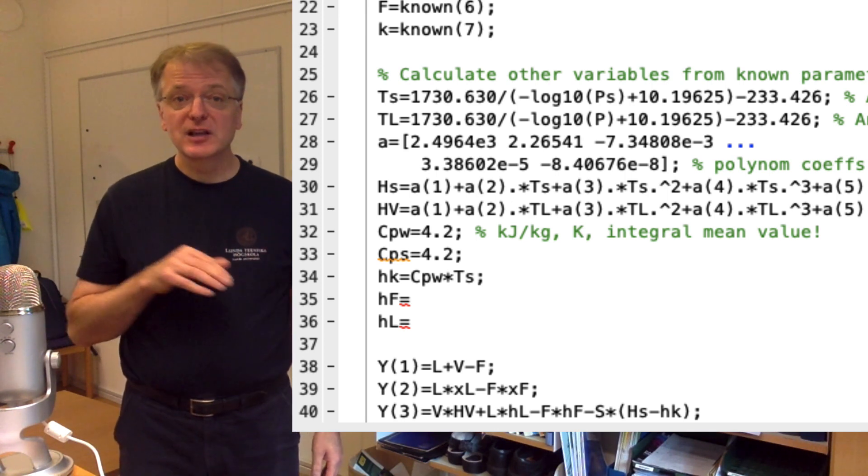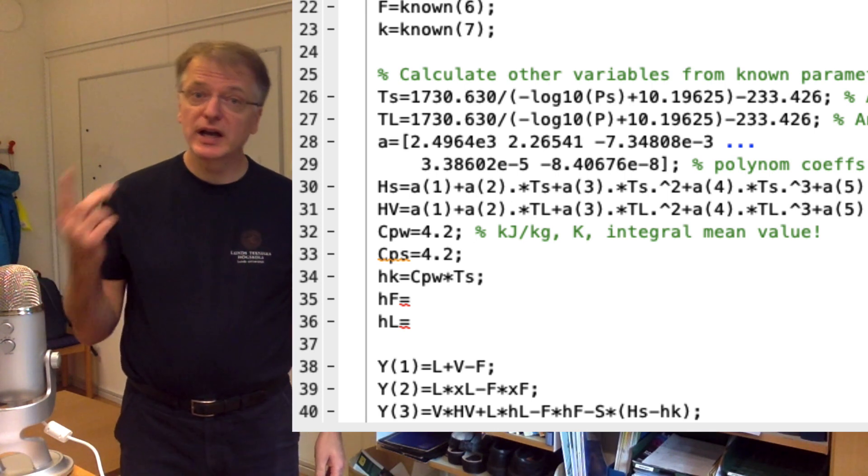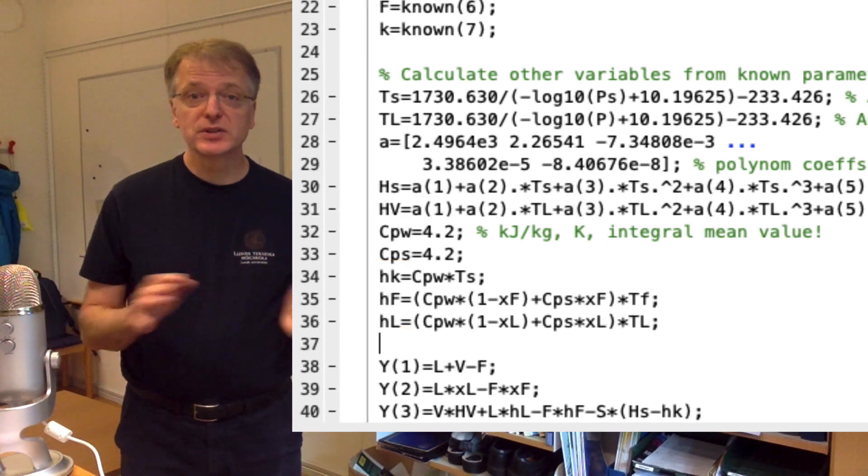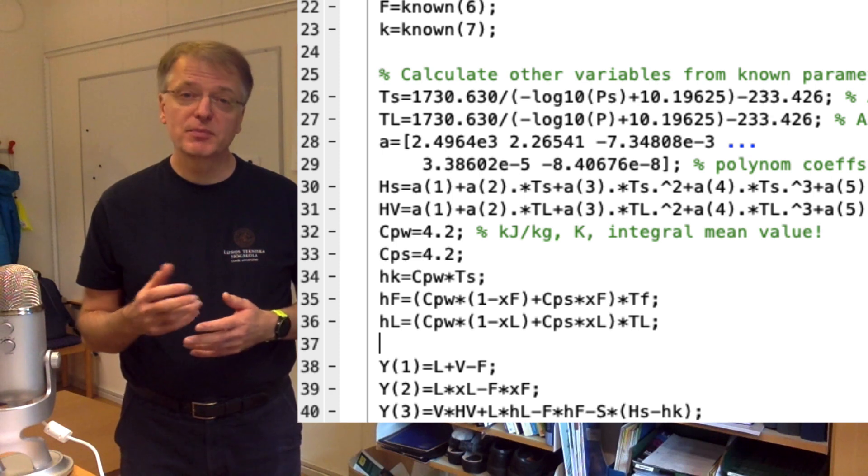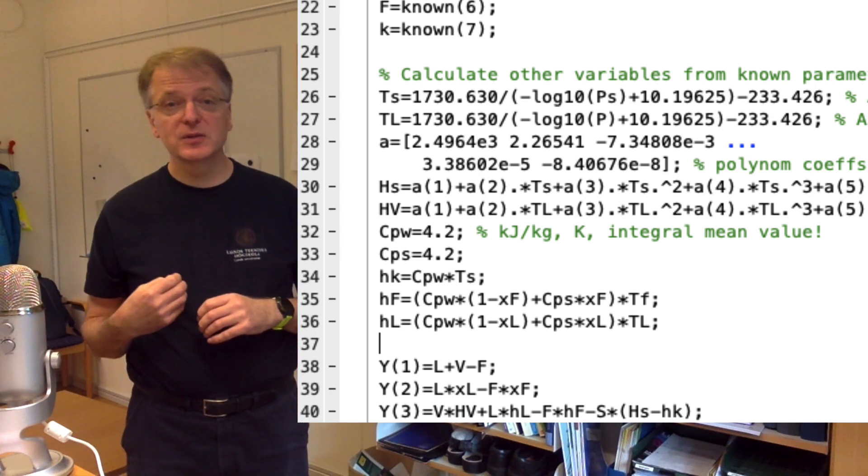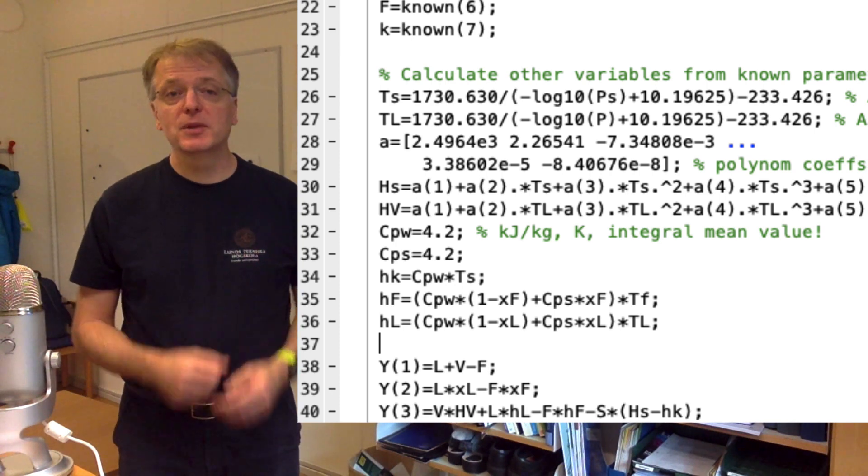For the feed F and the liquid L, we have both water and gelatine. If we assume that the solution is ideal, we can add the enthalpies of water and gelatine together. Thus we multiply Cp for water with 1 minus x and Cp for gelatine with x before we multiply with the temperature.